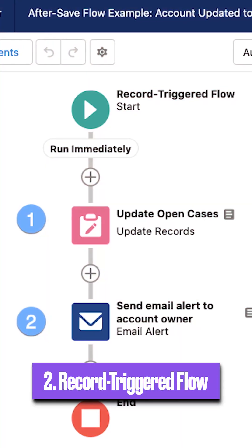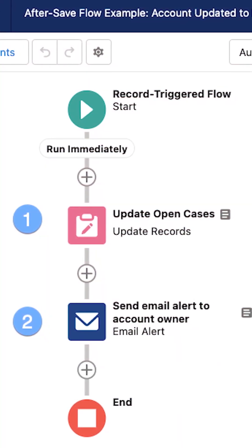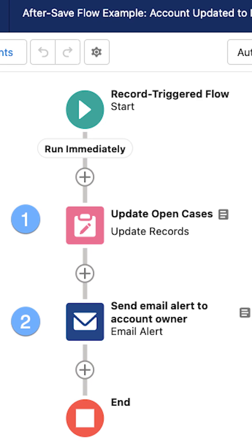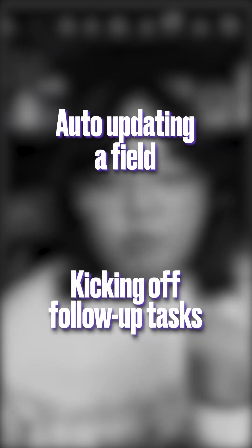Next is Record Triggered Flow, and this one runs automatically behind the scenes when a record is created, updated, or deleted. Use it for auto-updating a field or kicking off follow-up tasks.